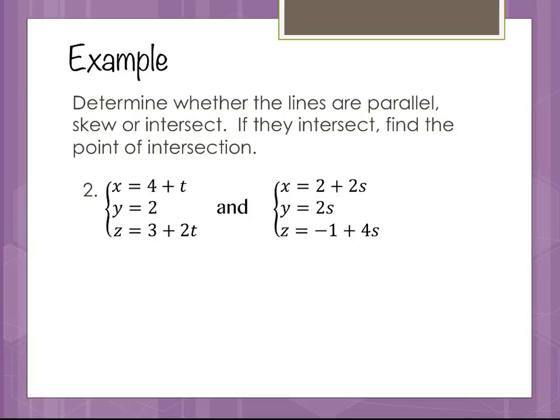In this next example, we need to determine whether the lines are parallel, skew, or intersect. Skew is not something that can happen in two dimensions — in a plane, lines are either parallel or they intersect. However, in three dimensions, lines can not intersect and not be parallel. Imagine the corner of a room: the line where the ceiling meets one wall and the line where another wall meets the floor won't intersect and aren't parallel — those are called skew lines.